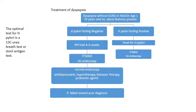Treatment algorithm for dyspepsia: if a patient has dyspepsia without GERD or NSAID use, is aged less than 55 years old with no alarm features, consider H. pylori testing. The optimal tests for H. pylori are the urea breath test or stool antigen test. If H. pylori testing is positive, treat for H. pylori.